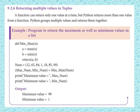Next is returning multiple values in tuples. In general, a function can return only one value at a time. But Python can return more than one value from a function — Python groups multiple values and returns them together.